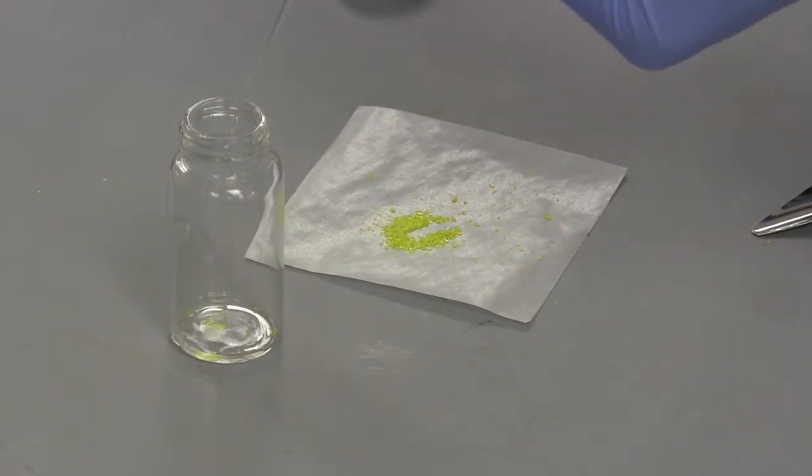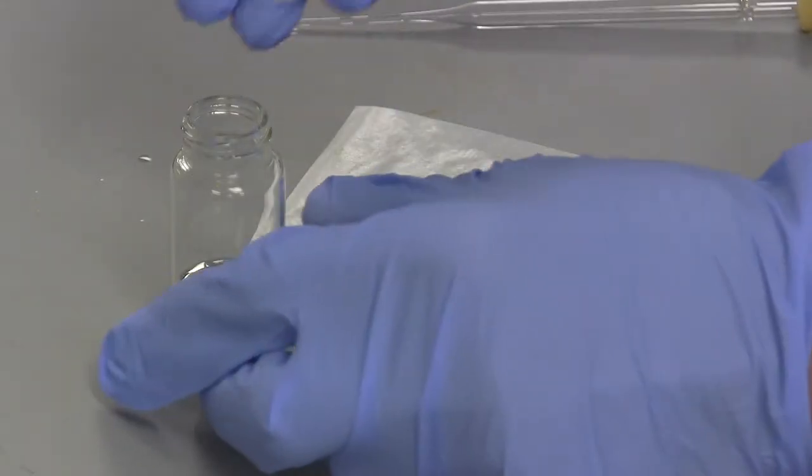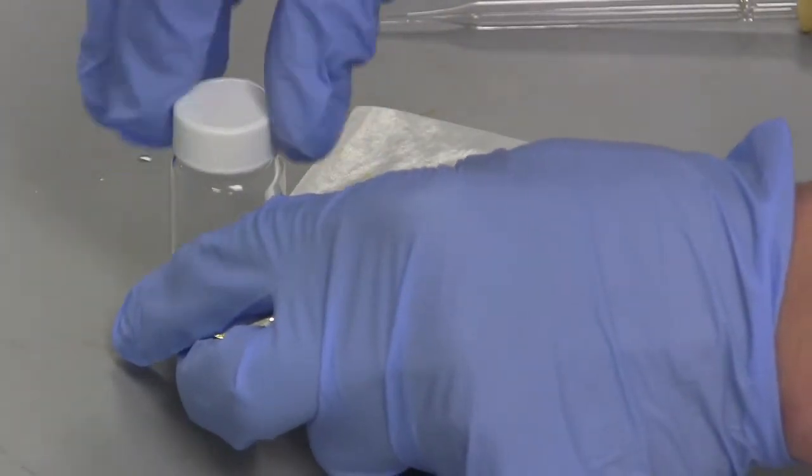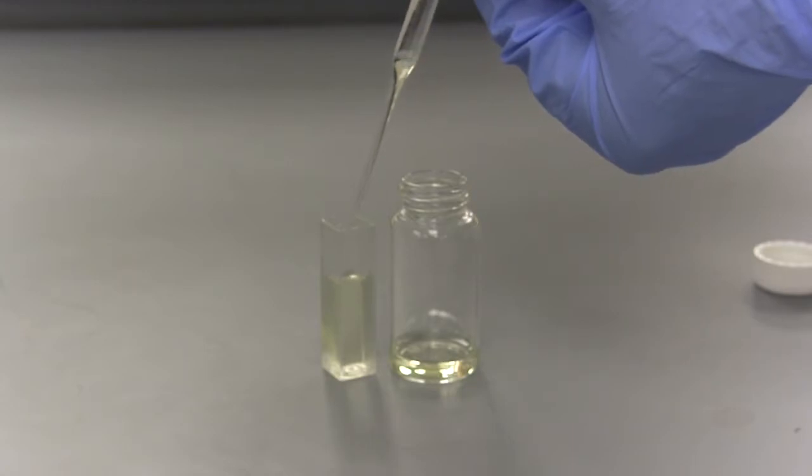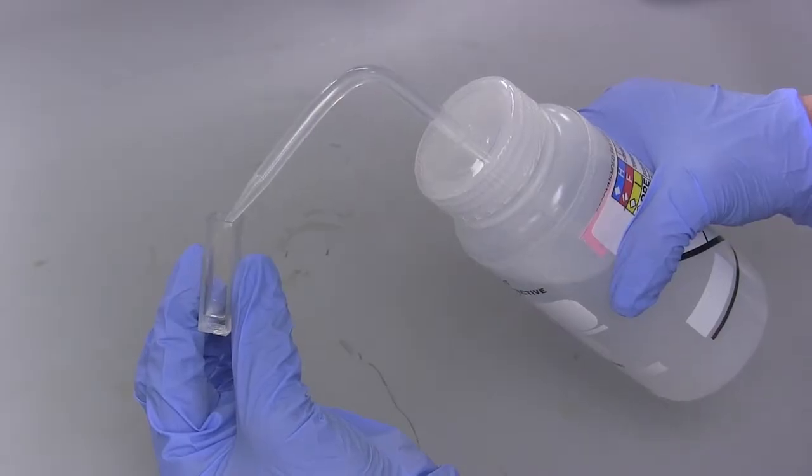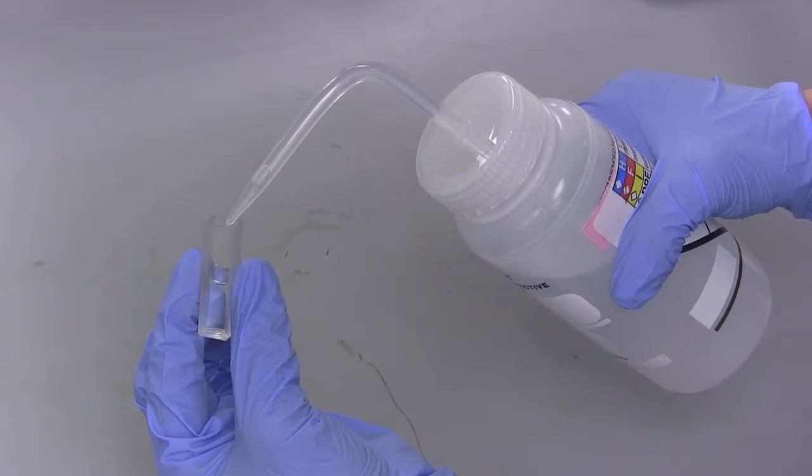Pipette in enough solvent into the scintillation vial to fill it about one quarter full. Cap the scintillation vial and gently swirl it to dissolve the sample. Transfer the solution from the vial to the cuvette, then pipette in the solution to fill the cuvette to the small arrow near the top. Also prepare a blank reference cuvette of solvent for calibration, filled to the arrow at the top.